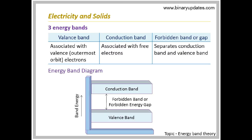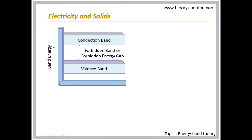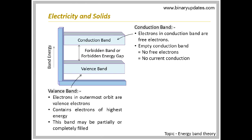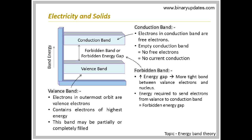Outermost orbit electrons in an atom are valence electrons. These electrons are present in the valence band. This band has the highest energy, hence it is partially or completely filled. Free electrons in an atom are conduction electrons. These electrons are present in the conduction band. This band is either partially or completely empty. An empty conduction band results in very high resistance, hence no current conduction.